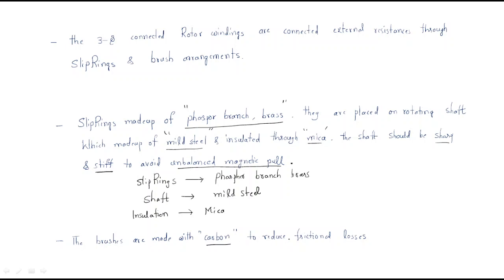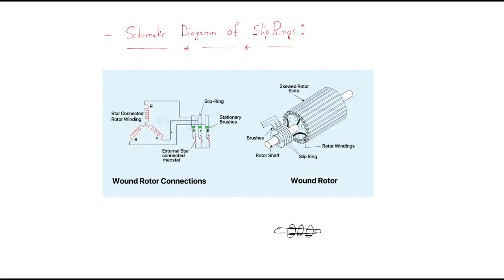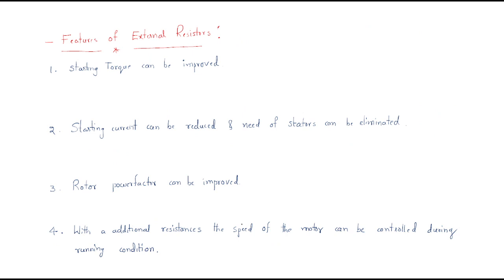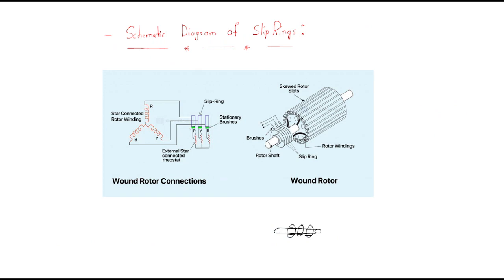The brushes are made with carbon to reduce frictional losses. The brushes provide contact between the external resistance and the phase windings and carry the winding currents. Generally, brushes are made with carbon, but sometimes they are also made with copper. The special reason for using carbon is that it produces less frictional losses. This is the importance of the slip rings of the wound rotor induction motor.